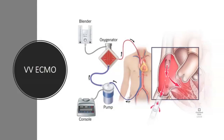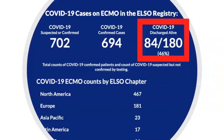Worldwide, according to ELSO, there are about 700 COVID patients on ECMO with a 46% survival rate so far. Three major arms must be weighed in applying advanced therapies like ECMO in a pandemic. Patient selection: centers are considering patients with severe ARDS defined by PaO2/FiO2 ratio below 100, specifically less than 80 for six hours or less than 50 for three hours—very severely ill patients who have had maximal optimization of traditional ventilation including proning and paralysis.